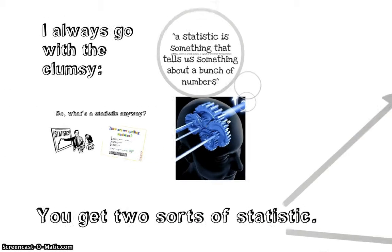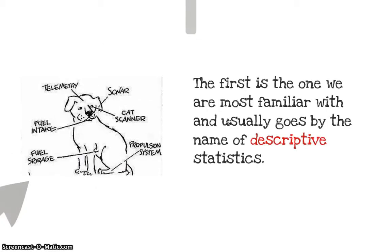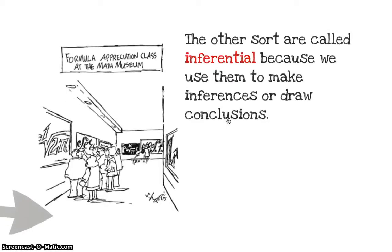So you get two sorts of statistics. The first one is the one we're most familiar with and we usually refer to that as a descriptive stat. And the second one, we call that an inferential stat because it allows us to make inferences or draw conclusions. It's what makes it interesting to a scientist.